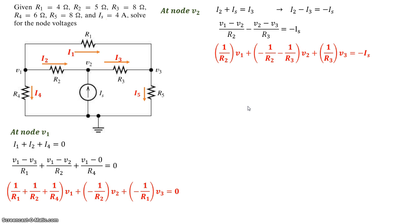So far, we have two equations and three unknowns, V1, V2, V3. So let's use the third node, V3, to come up with the third expression.